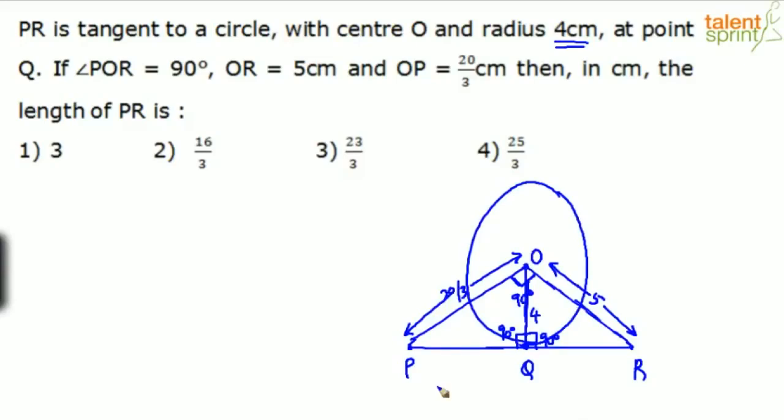All we need to do now is we have to find out the length PR. Now to find out PR, you must first know what is PQ and what is QR. Find out these two individually and then add them to get the complete length. If you look at the triangle PQO, in triangle PQO, this is like a right angle triangle.